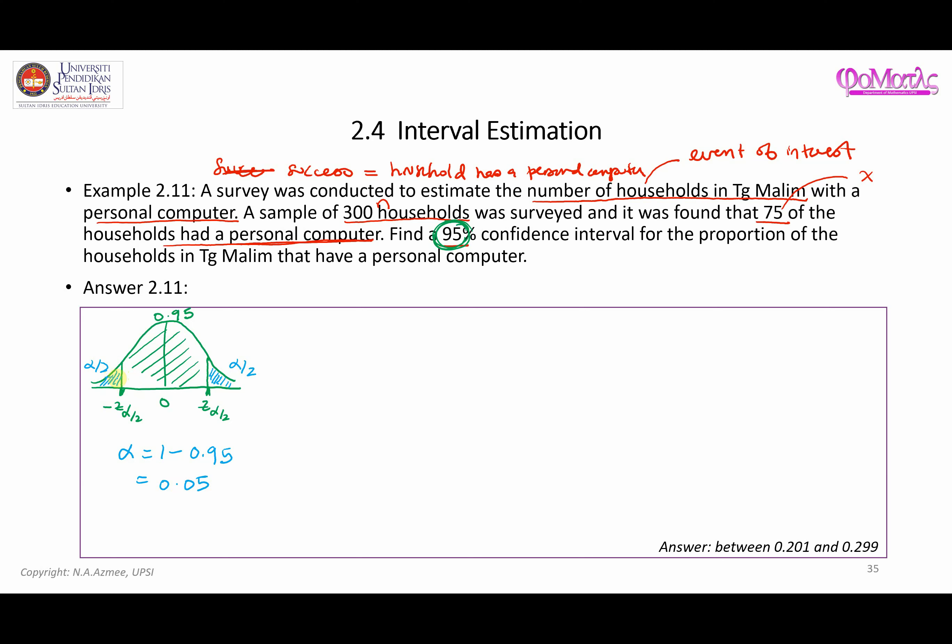Alpha needed to be divided with 2 in order to get the area on the very end. So 0.05 divided by 2, this area is going to be equal to 0.025. Similarly this one is also going to be 0.025. Using the standard normal distribution table, you should be able to get that the value of Z 0.025 is going to be equal to 1.96.